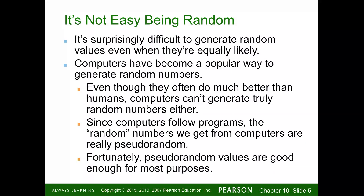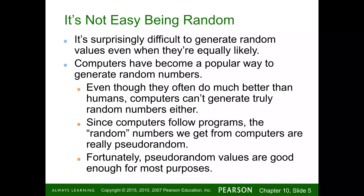If you choose a number between 1 and 10 one thousand times, you'd think you'd have the same count of each number — but whether a computer, human, or device does it, the results won't be exactly even. Since computers follow programs, the random numbers we get from them are pseudo-random: the computer starts with a number, does some math, truncates things, and spits out an output. Fortunately, pseudo-random values are good enough for most purposes.